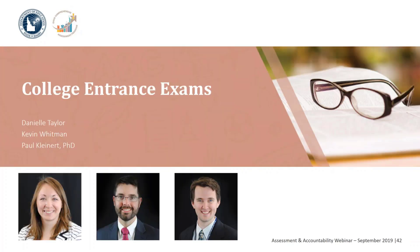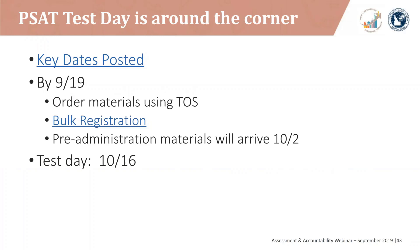Now moving to an update from the college entrance exam team — this is Paul Kleiner again. The preliminary SAT National Merit Scholarship Qualifying Test is just around the corner. We recently posted lots of helpful college entrance exam information to the Idaho SDE Assessment and Accountability website, including the PSAT Coordinator Manual and Tips for Preparing for the Fall PSAT and MSQT. September 19th is the last day to order, reduce, or increase your testing materials via the test ordering system. It is also the last day to use the bulk upload system so that you can receive your pre-admin materials, including the pre-ID labels, on October 2nd.